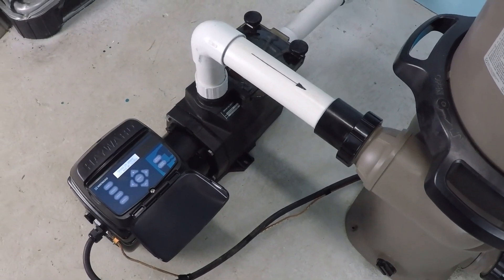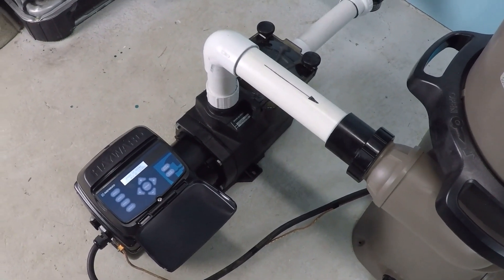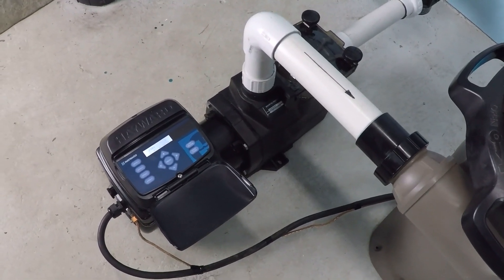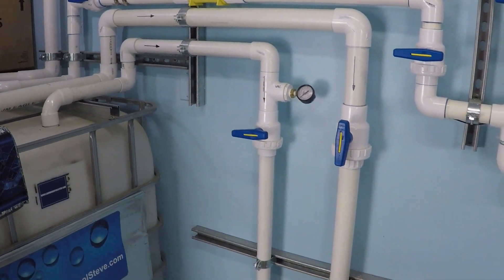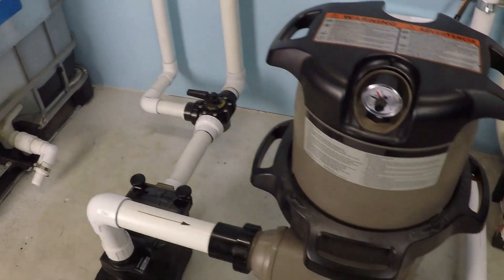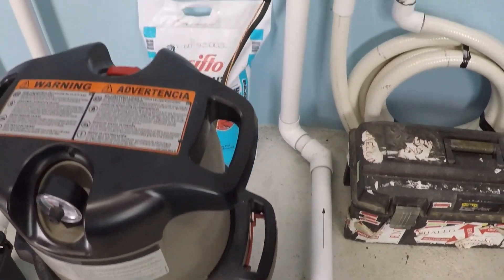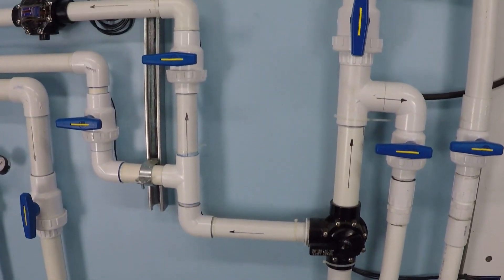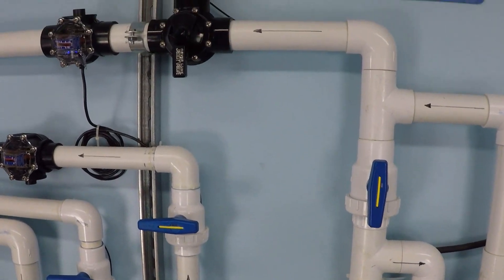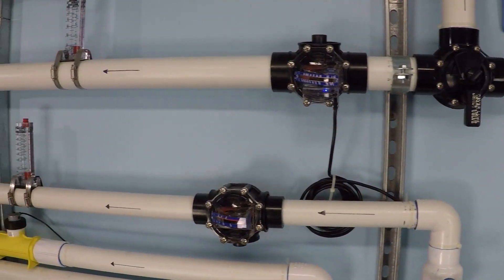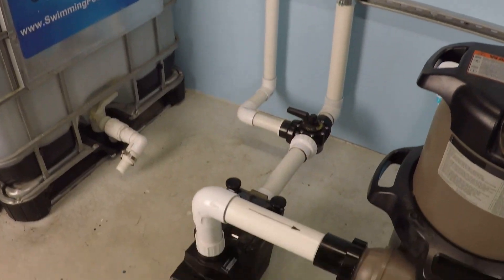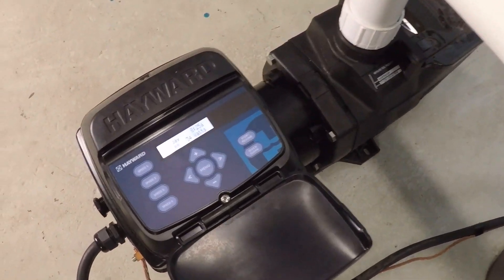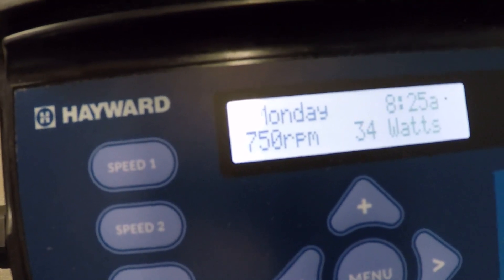And here we are with a Hayward Super Pump variable speed. This is a 230-volt model, and the system parameters are all the same as with the last pump. We've got the 2-inch suction line open through a 150-square-foot cartridge filter, and then again through this 2-inch line and through these flow meters. Right now, we are already running here at 750 rpm.